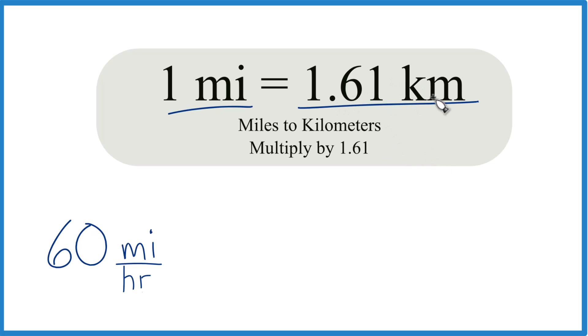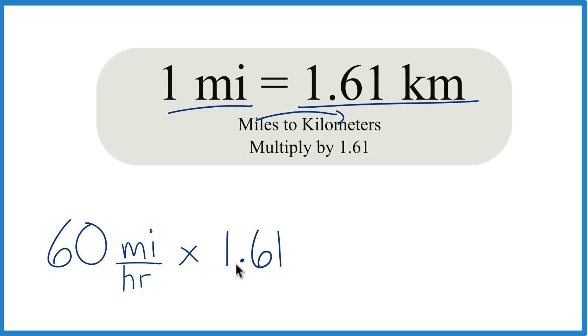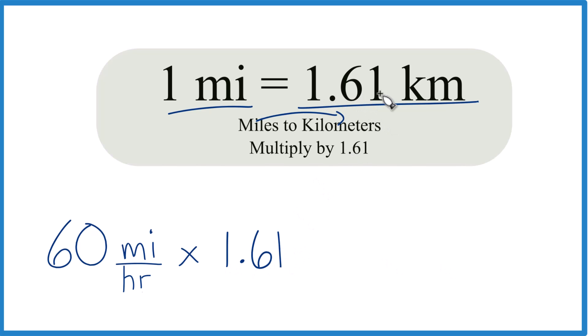Here we're going to use 1.61. So miles to kilometers, just multiply by 1.61. So 60 miles per hour times 1.61, and there are 1.61 kilometers in one mile, so kilometers per mile.